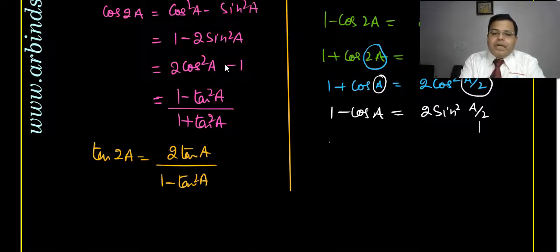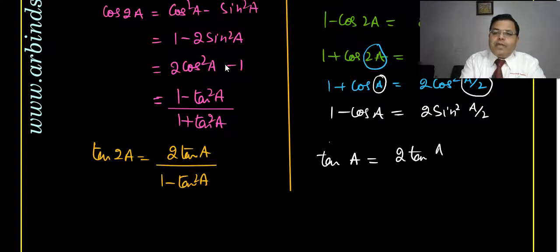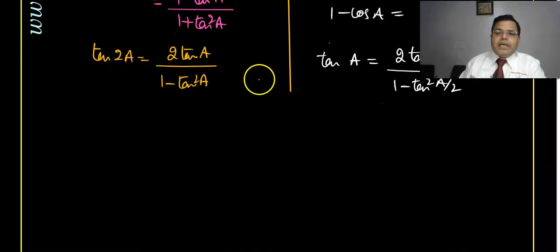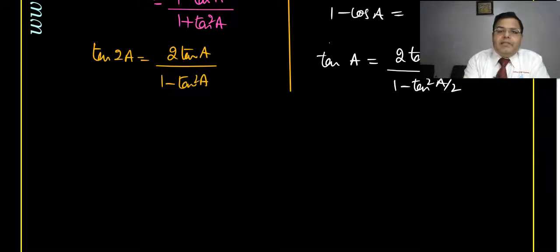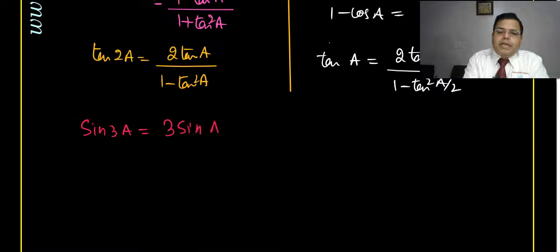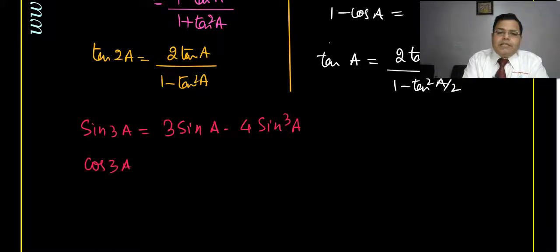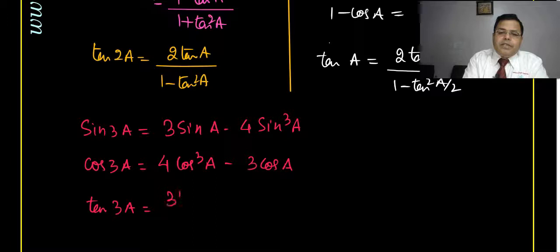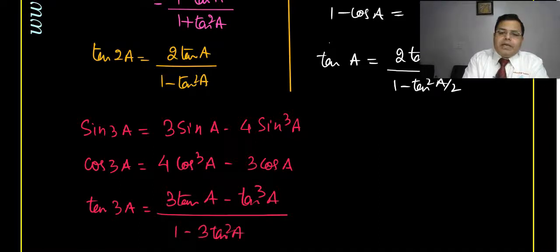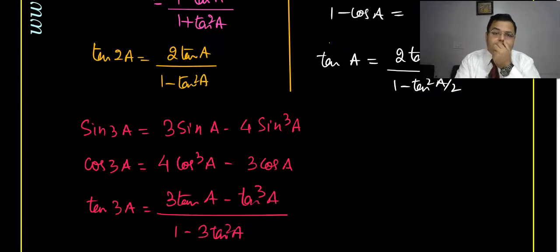The tan double angle formula: tan 2A equals 2 tan A upon (1 minus tan squared A). For the submultiple form: tan A equals 2 tan(A/2) upon (1 minus tan squared(A/2)). There are also formulas for triple angles. If there is a formula for 2A, there must be one for 3A.